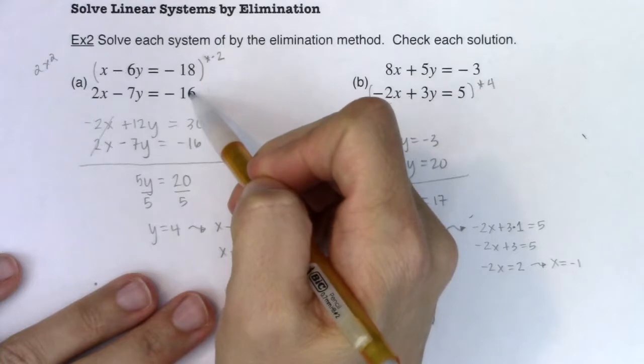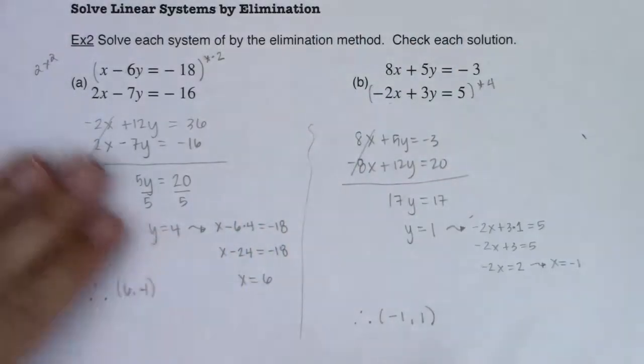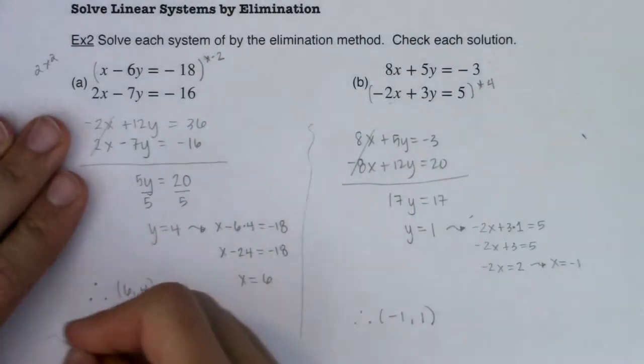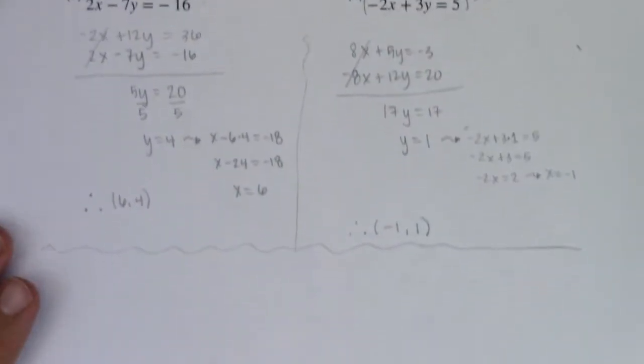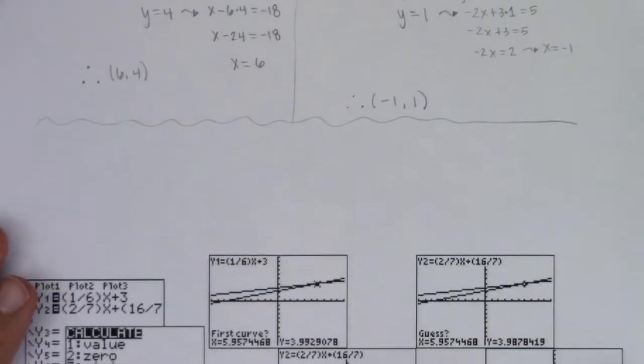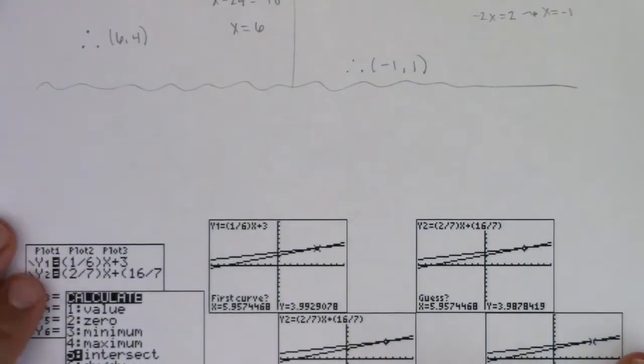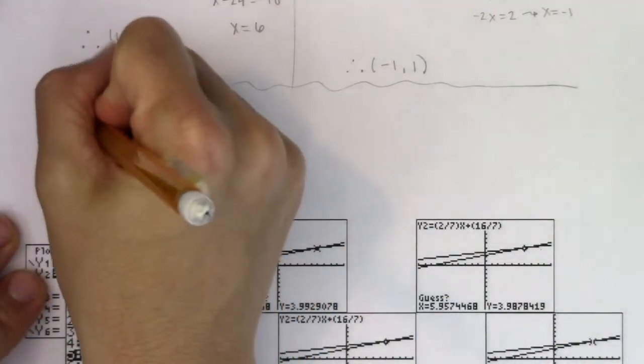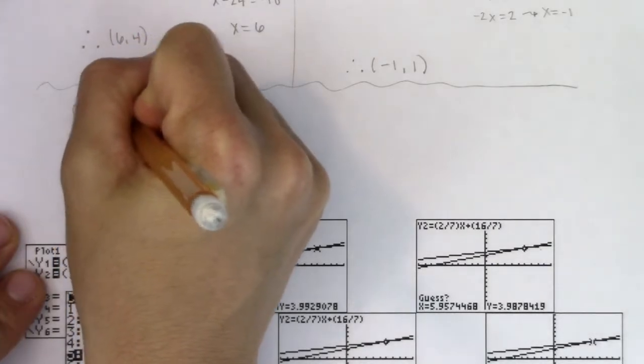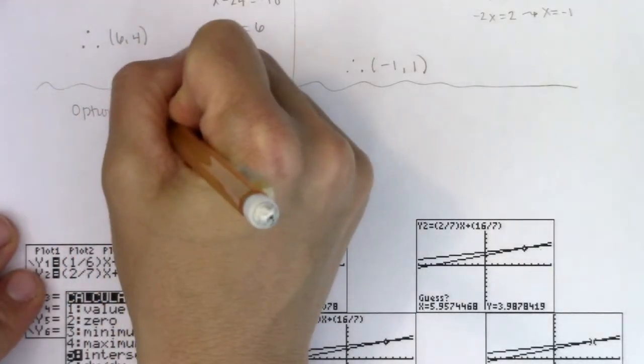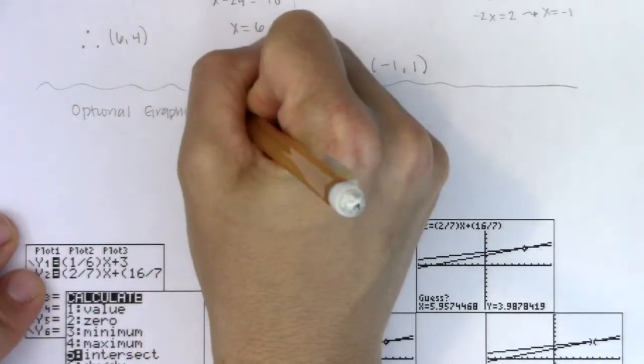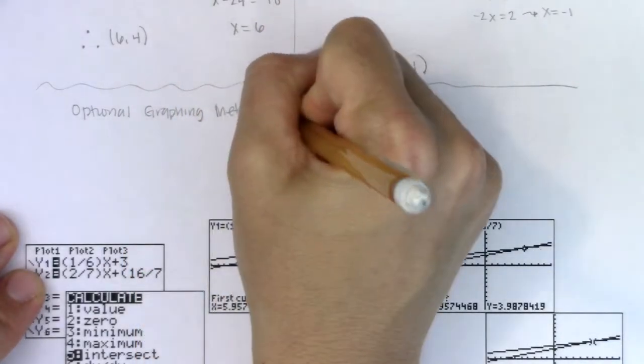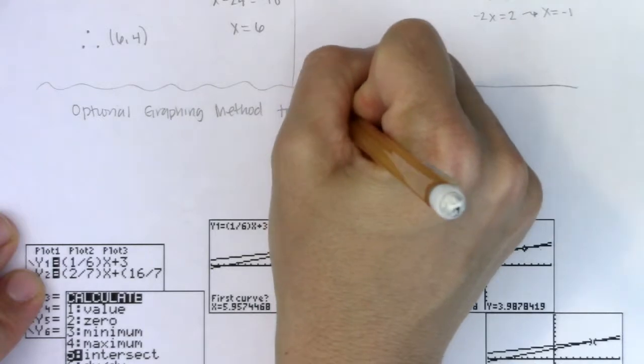You could take both of these equations and rewrite them in slope-intercept form. So I'm going to just move this for a little bit. Let me move this up. And let's talk about the optional graphing method. Alright. So let's take a look.